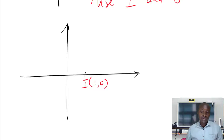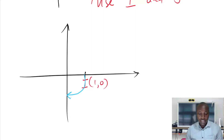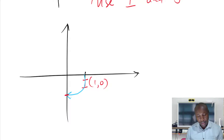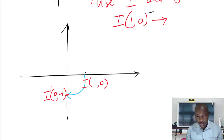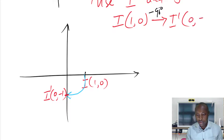So if I rotate i in a clockwise 90 degrees direction, this point will move to here — that is clockwise 90 degrees. So i at (1,0) will move to this point. The image of i, which is i prime, will be (0, negative 1). So i at (1,0) after a negative 90-degree rotation moves to i prime at (0, -1).